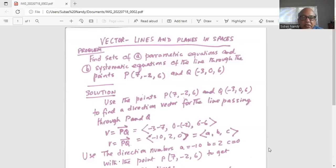Find sets of parametric equations and systematic equations of the line through the points P with coordinates 7, minus 2, and 6, and Q with coordinates minus 3, 0, 6.